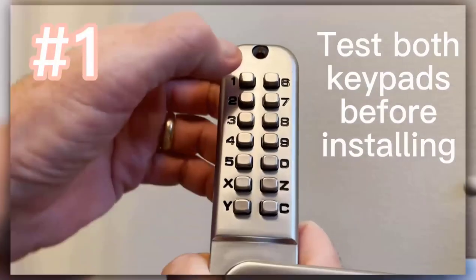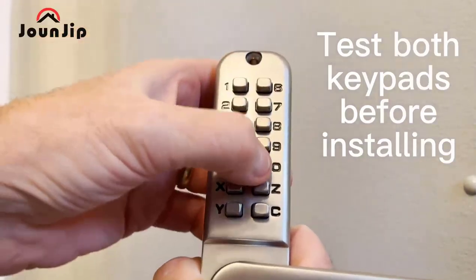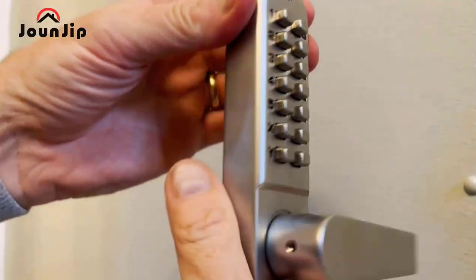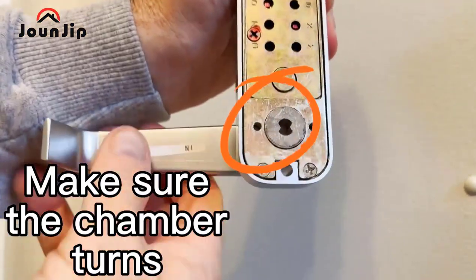Tip number one: test both keypads before installing. Make sure the chamber turns on the back of the lock.